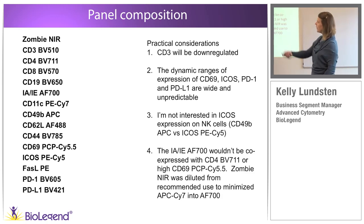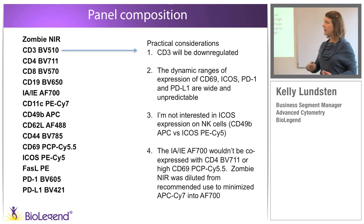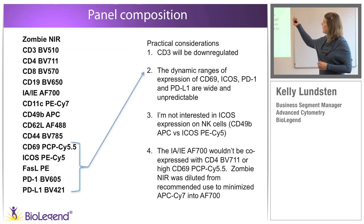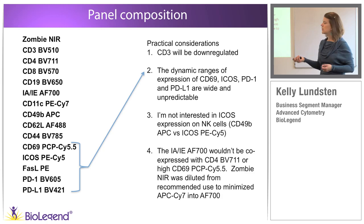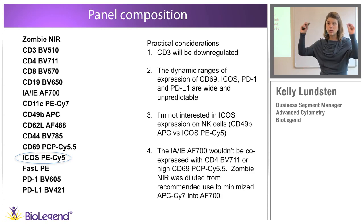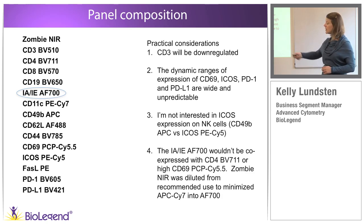After all of that, here is the final panel on the left-hand side. Practical considerations from initial testing: I knew CD3 would be downregulated, so I put it on BV510 — a very bright fluorophore, but not sacrificing a really sensitive channel. The dynamic range of CD69, ICOS, PD-1, and PD-L1 expression was going to be relatively unknown. I'm not particularly interested in ICOS expression on NK cells, so I put PE-Cy5 there to ensure those two things are not co-expressed. MHC class II on Alexa 700 needed to not be co-expressed with BV711 or high CD69 expression — and Alexa 700 on MHC class II was absolutely beautiful, a surprisingly good match despite being a dim fluorophore.